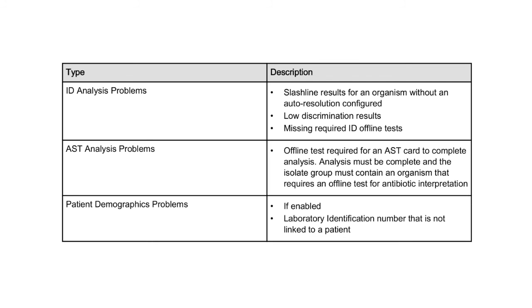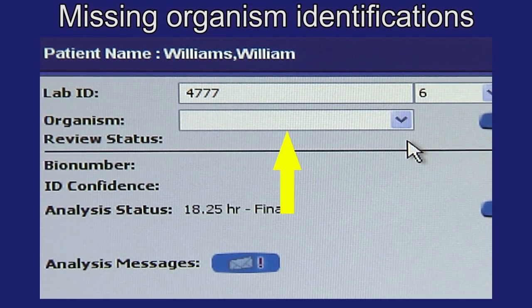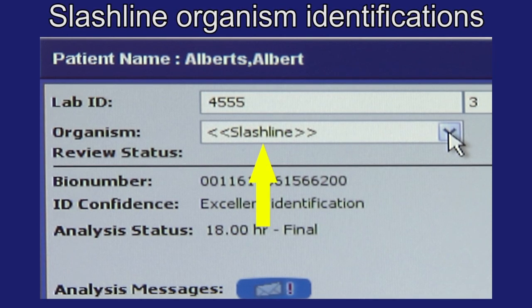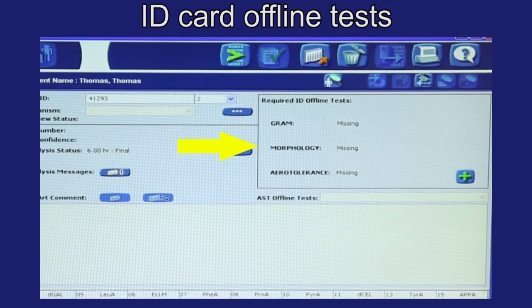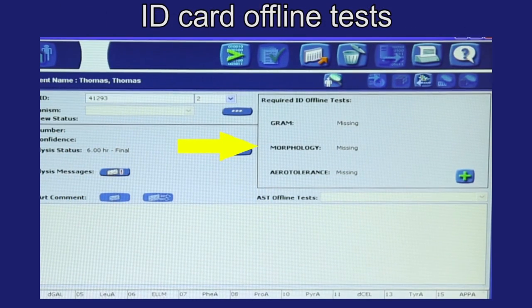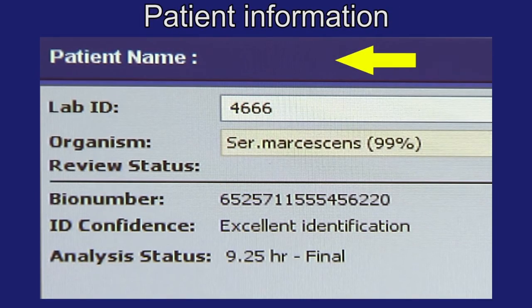Characteristics that trigger qualified status include identification (ID) problems, antimicrobial susceptibility testing (AST) problems, and patient demographic problems if patient demographics is enabled. Essentially, a qualified isolate is one that is missing required information. Specific examples of missing information include missing organism identifications, slash line organism identifications, low discrimination identifications, ID card offline tests, beta-lactamase test, and patient information.